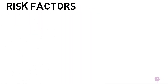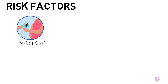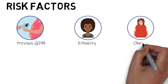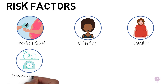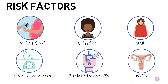Let's start off with risk factors. The strongest predictor is previous gestational diabetes, with a recurrence risk of around 30 to 70 percent in subsequent pregnancies. Next, we've got ethnicity — South Asian, Black Caribbean and Middle Eastern ethnicities have a higher risk of developing GDM. Next up is obesity, so women with a BMI over 30. We've also got previous macrosomia, a family history of diabetes, and those suffering from PCOS.